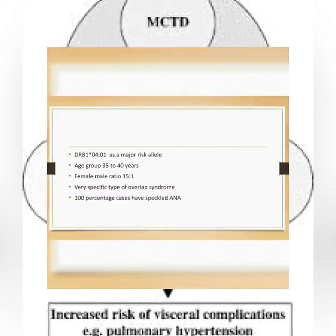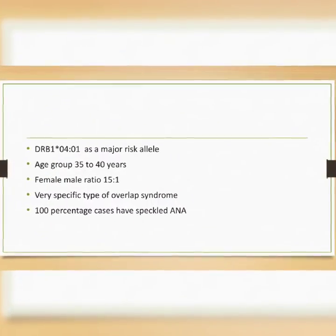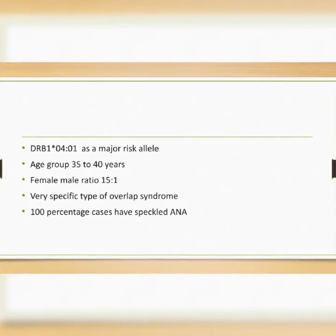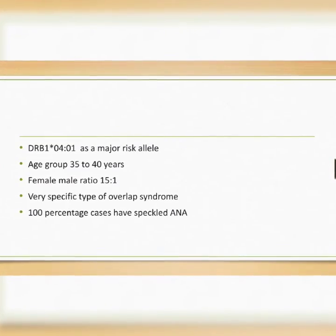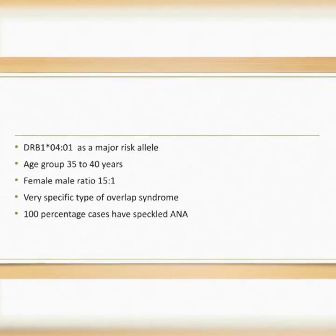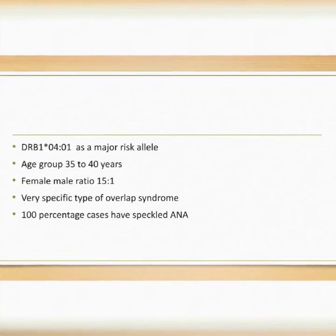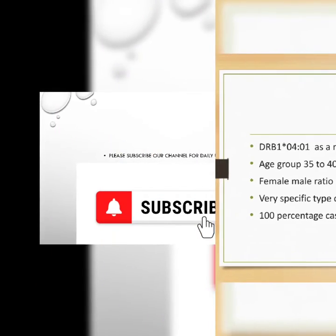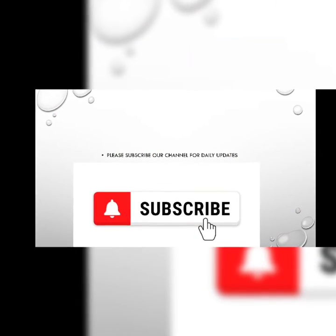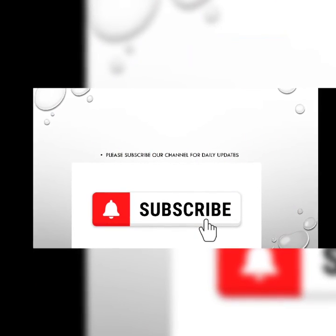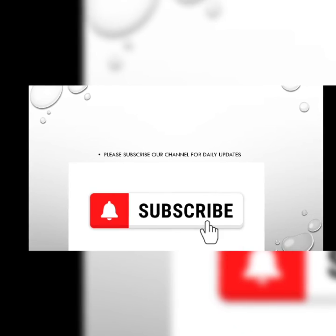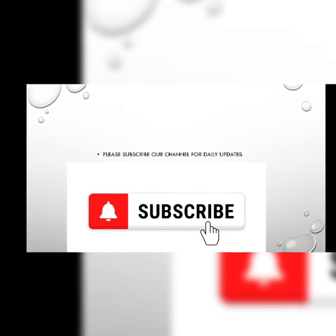DRB1-04-01 is a major risk allele. The age group is 35–40 years, with a female-to-male ratio of 15:1. MCTD is a very specific type of overlap syndrome, and 100% of cases have speckled ANA.